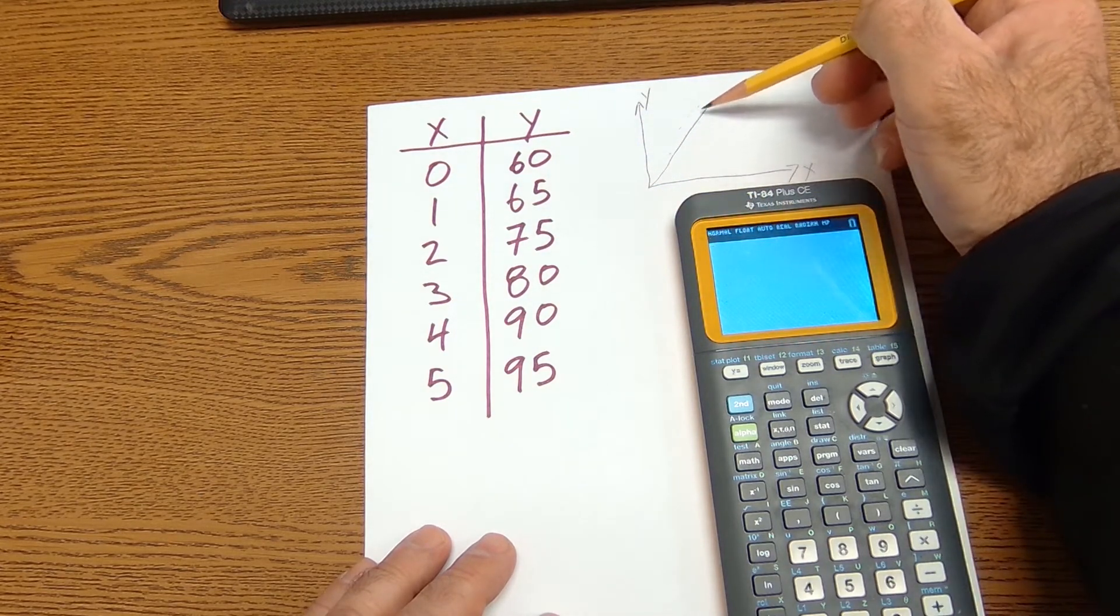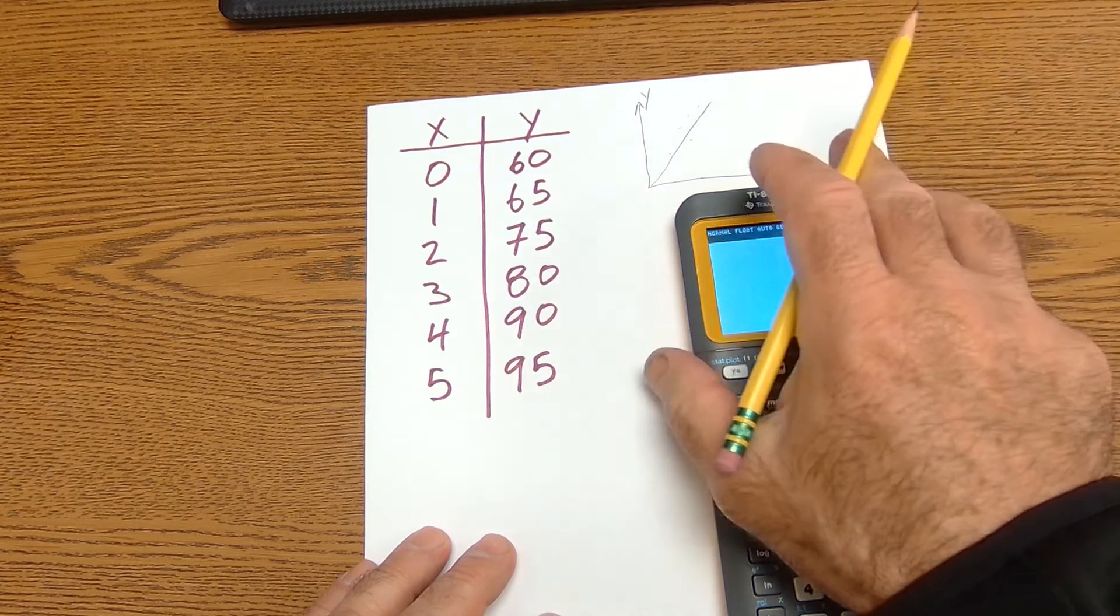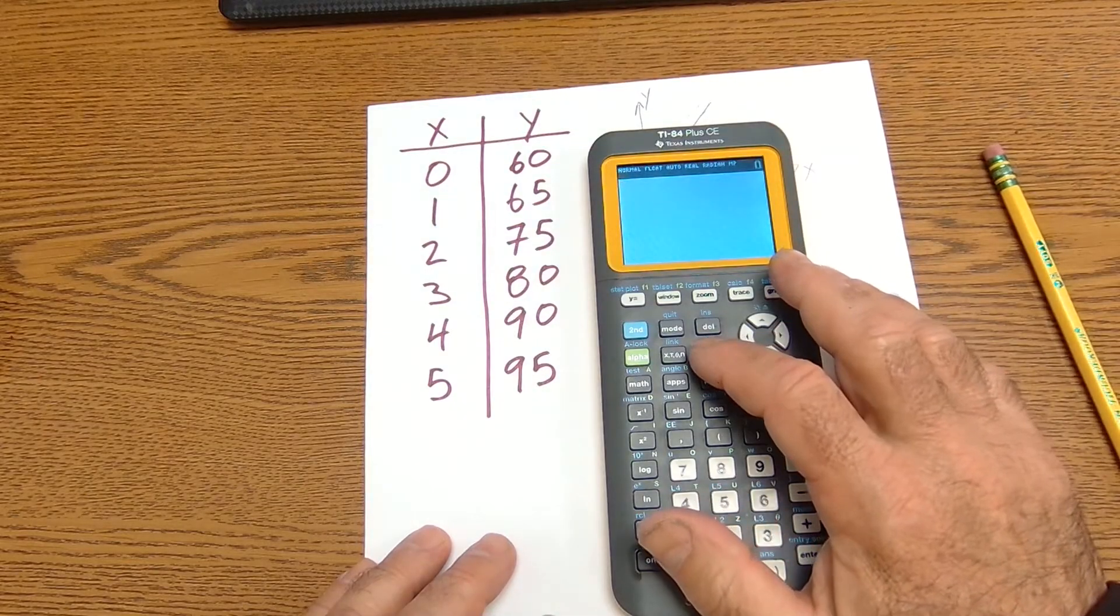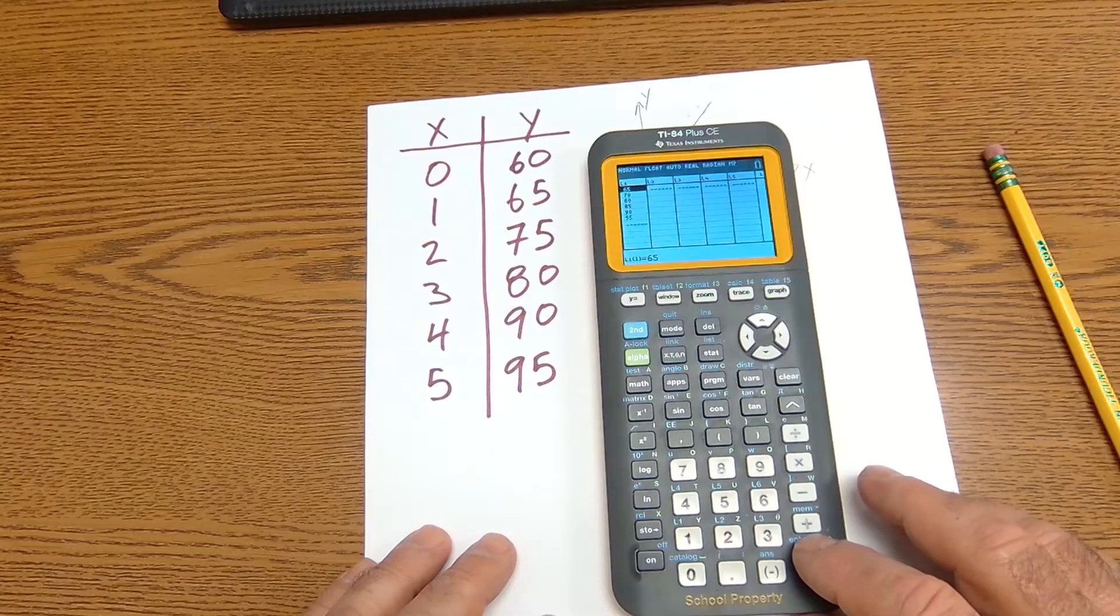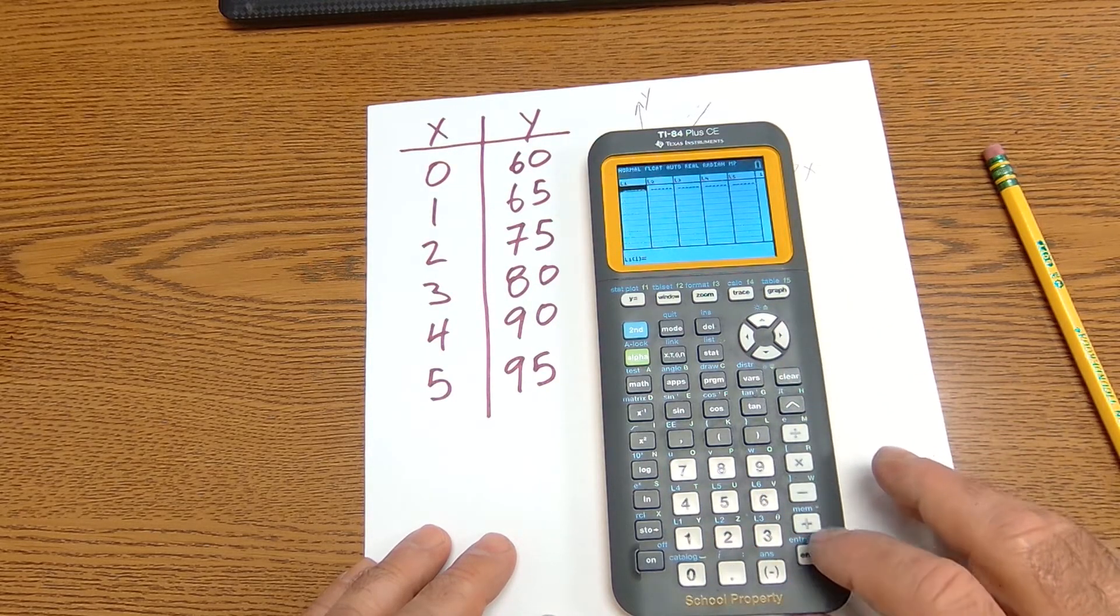So I have these data points somewhere on my graph like this, and I want to find the line of best fit. That's called a regression. And the way I'm going to do that is I'm going to do the same thing. It's a statistical analysis. I go to stat. I'm going to edit. First thing I want to do is clean my list or clear them. So I hit enter.